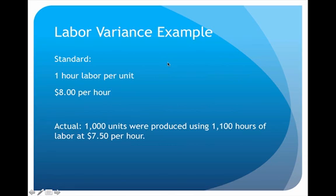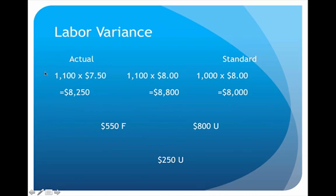For a labor example with the same company, their standard is one hour per unit and they typically pay eight dollars per hour. What actually happened: they produced one thousand units, worked eleven hundred hours, and were paid seven fifty per hour. So they actually paid eight thousand two hundred fifty dollars for labor. On the standard side, they should have worked one thousand hours at eight dollars an hour, equaling eight thousand dollars. The midpoint — actual hours eleven hundred times standard rate eight dollars — equals eight thousand eight hundred dollars.